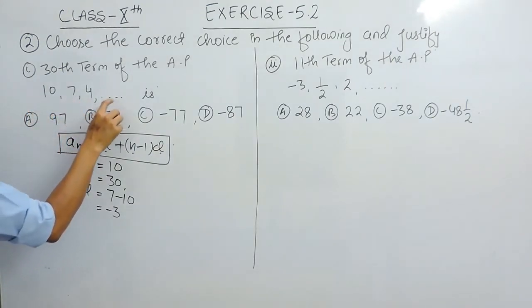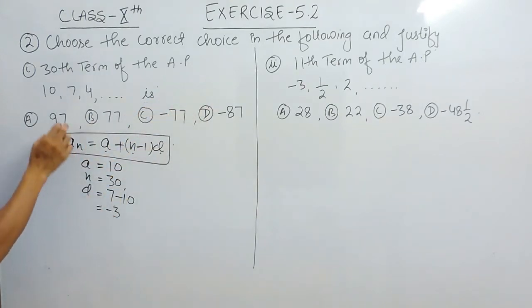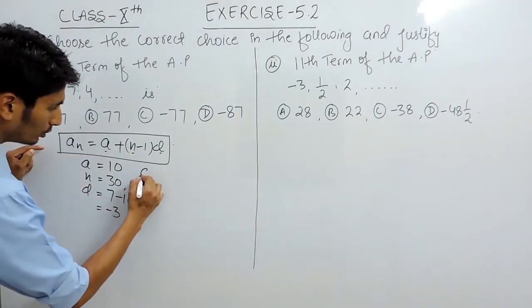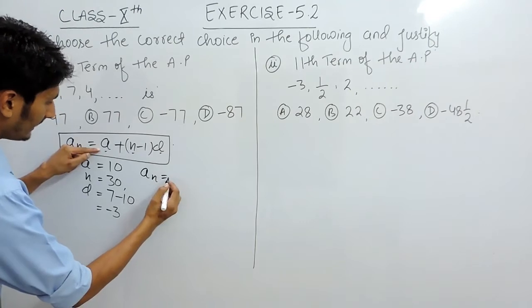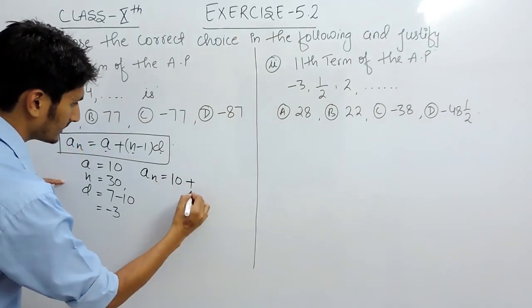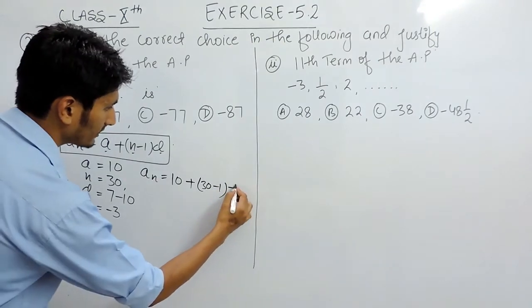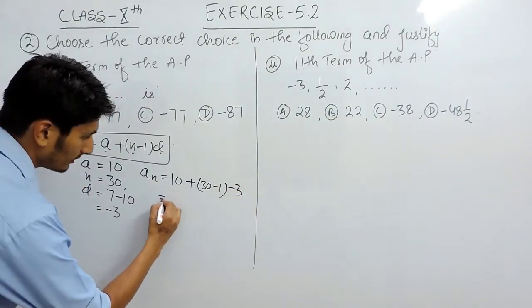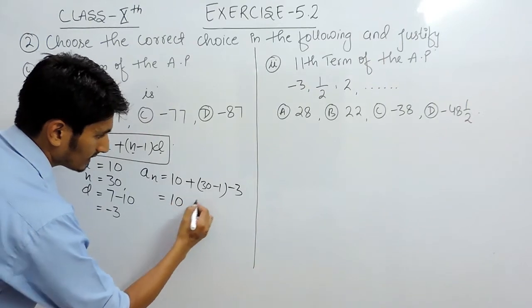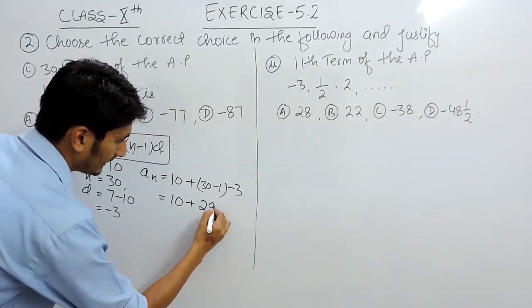One thing is important: because the series is progressing on the right-hand side, you have to subtract this value from this value, not this from this—that would make your common difference wrong. Substituting the value, the an will be a, which is 10, plus n, which is 30 minus 1, and the common difference is -3. So this will be 10, this is 29.